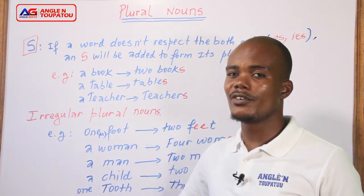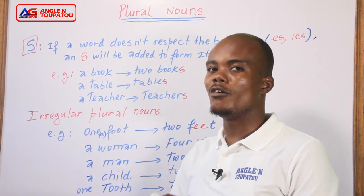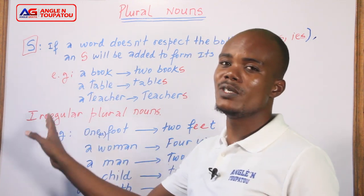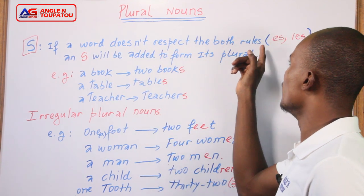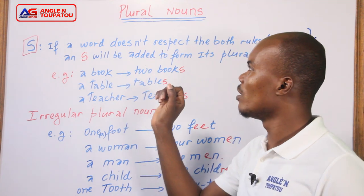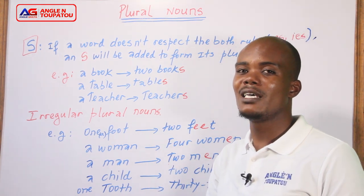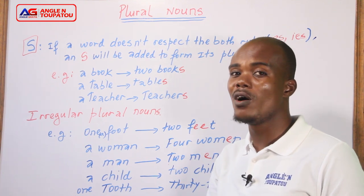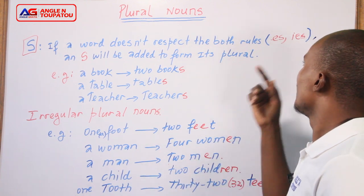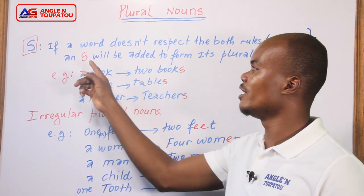Before going to irregular plural nouns, avan ke nou ale nan nou ki yen pluyel irregulier yo, but what about S? Because you finish to learn how to use ES, ou konne koman pou mette ES nan o mo, IES nan o mo, what about S? But it's really simple. If a word doesn't respect both rules — ES or IES — then S will be added to form its plural. Si ou ga de yon mot li pa respecte de principe avan, li pa ka pran ES, donc depi mou a pa termine pa S, CH, X, Z, O, li pa ka pran ES, et puis depi mou a pa termine pa Y e fo ke Y la gon konsonne levan, li pa ka pran IES — depi de reg sa ou pa aplike, n'epote mou a pa vinde levan ou jis ajoute yon S pou forme pluriali.